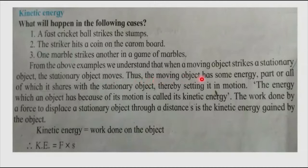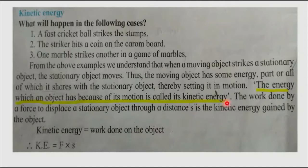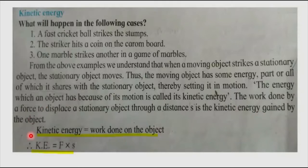Thus, the moving object has energy, part or all of which it shares with the stationary object, thereby setting it in motion. Definition: the energy which an object has because of its motion is called its kinetic energy. An object in motion always has kinetic energy. The work done by a force to displace a stationary object through a distance s is the kinetic energy gained by the object. Thus, kinetic energy is equal to the work done on the object.